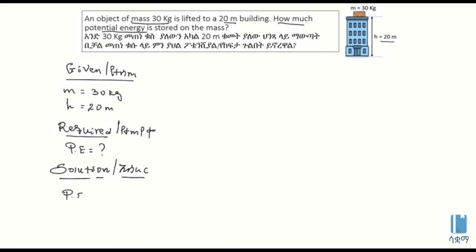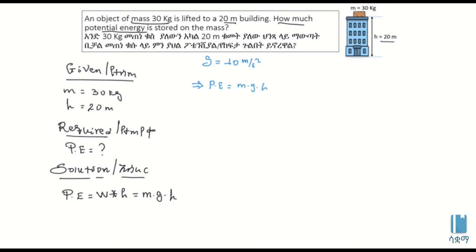This potential energy is used in the formula: weight times height, weight times gravity — mgh — mass times gravity times height. Potential energy is equal to mass times gravity times height.